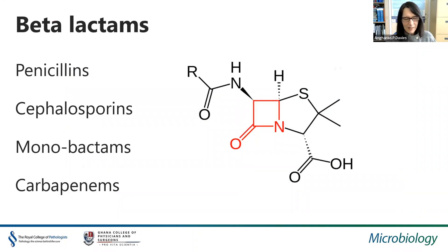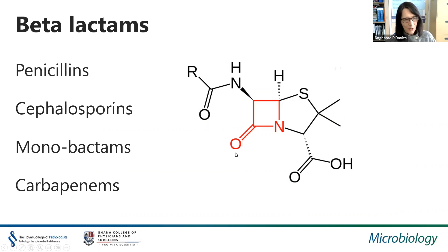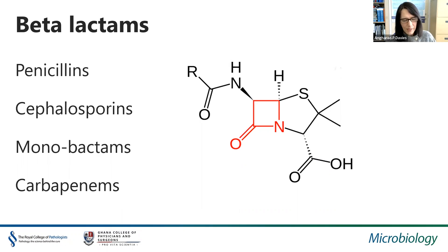All beta-lactam antibiotics contain the beta-lactam ring as the active part of the molecule; they differ in their side chains, which give them different clinical characteristics in terms of the cover they provide. Beta-lactams can be broken down into four groups: the penicillins, the cephalosporins, the monobactams, and the carbapenems. I won't discuss monobactams further as they're not commonly used, and will concentrate on the penicillins, cephalosporins, and carbapenems.